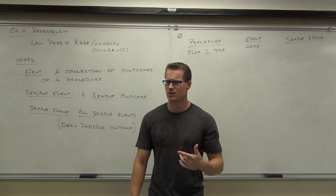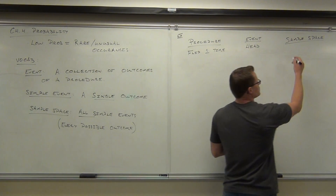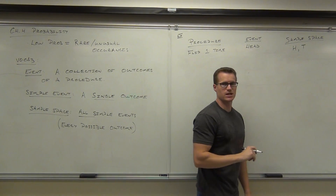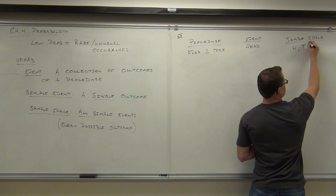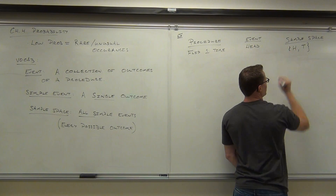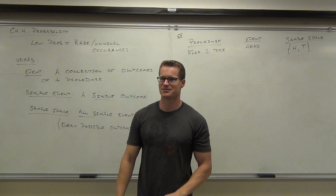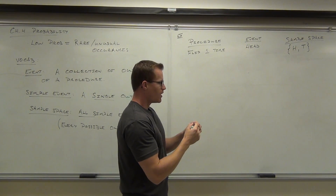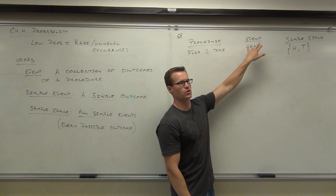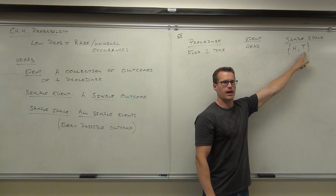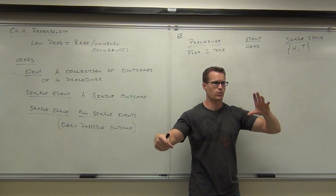Our procedure is flipping a coin one time. So you flip the coin — what could you possibly get? You either get a head or you get a tail. That's what our sample space is. You can't get anything else besides a head or a tail when you flip the coin one time. So our sample space is a collection of simple events. To summarize: procedure is what you're doing, event is what you're looking for, simple events are what could happen, and your sample space is a collection of all those things.